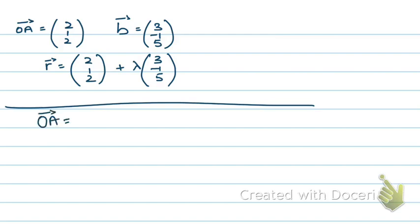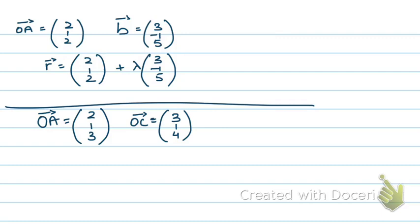Now let's say I've been told that a line passes through the points (2, 1, 3) and (3, 1, 4). To form a line equation I need a fixed point — I have 2 points on the line so I can take either as my A — but I also need a direction vector. A direction vector is parallel to the line, so if I form vector AC using these two points, AC is parallel to the line and can be used as my direction vector. AC = (3-2, 1-1, 4-3) = (1, 0, 1).